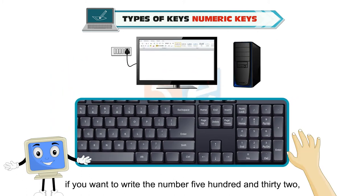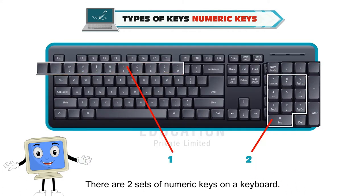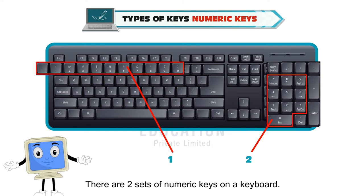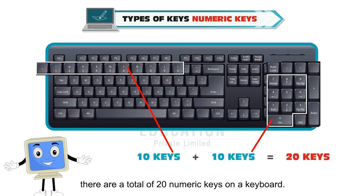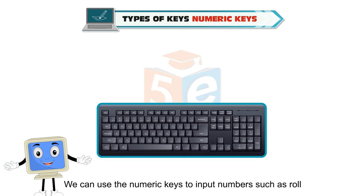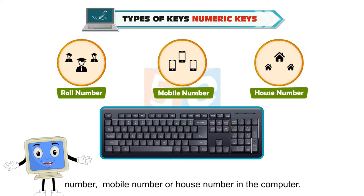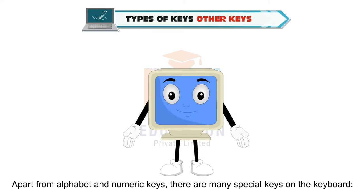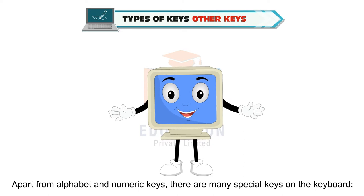For example, if you want to write the number 532, you will press the number keys 5, 3 and 2. There are 2 sets of numeric keys on a keyboard, so since there are 10 keys in one set, there are a total of 20 numeric keys on a keyboard. We can use the numeric keys to input numbers such as roll number, mobile number or house number. Apart from alphabet and numeric keys, there are many special keys on the keyboard.